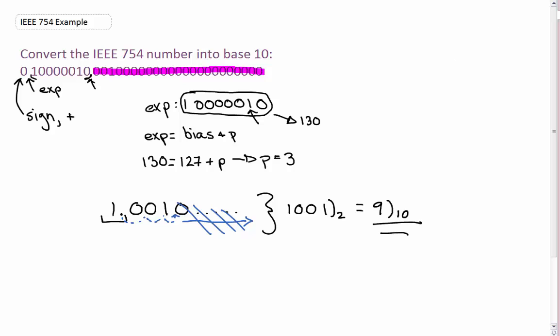So just as a refresher, if let's say the number they gave us is a 1 here, we'd actually end up with the exact same answer except that it would be negative. Because remember that when our sign is 1, that's a negative number. And when our sign is 0, that's a positive number.